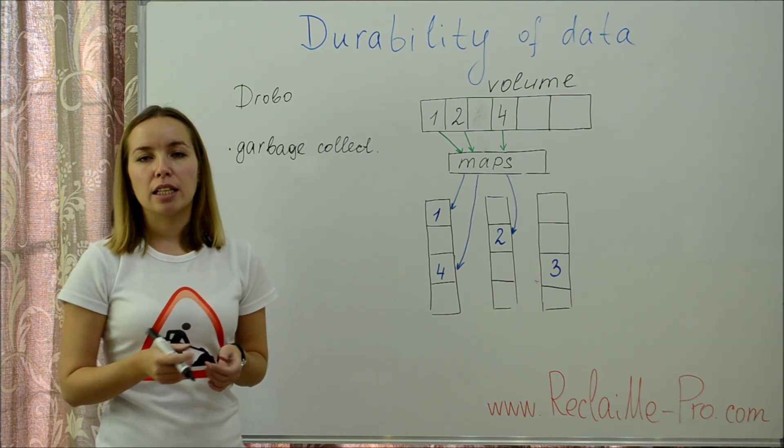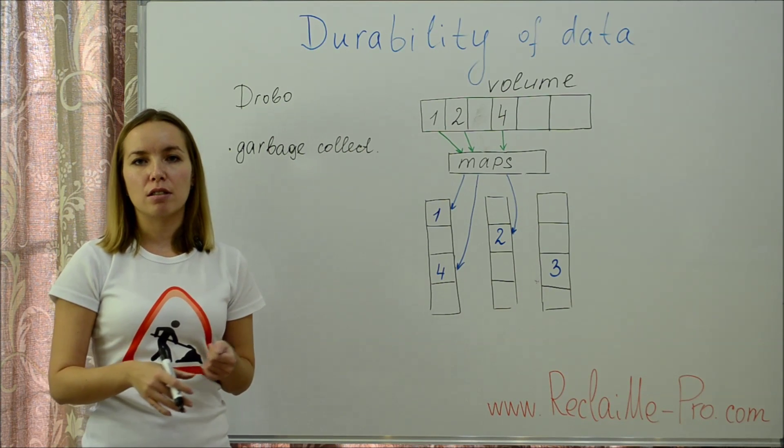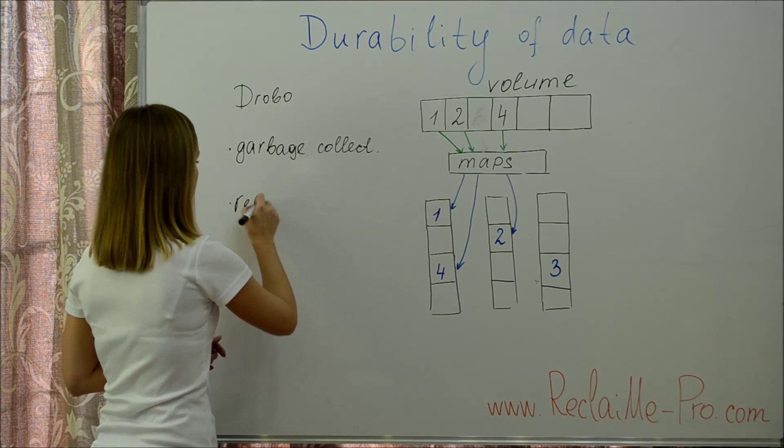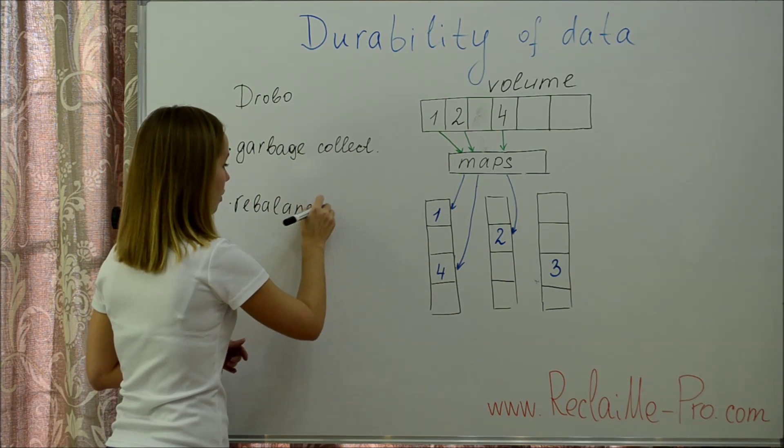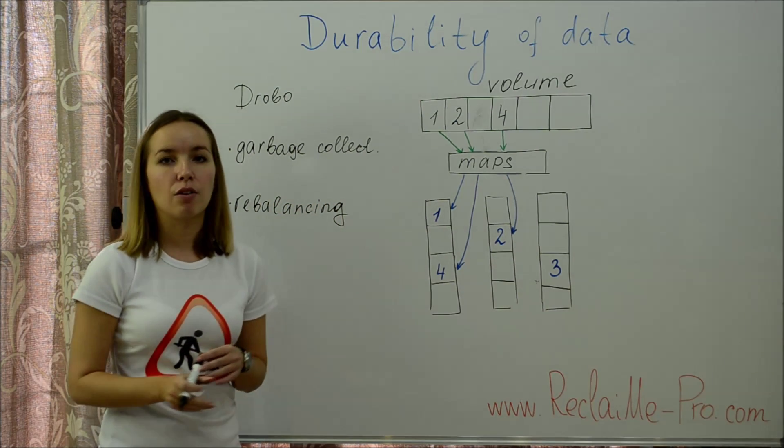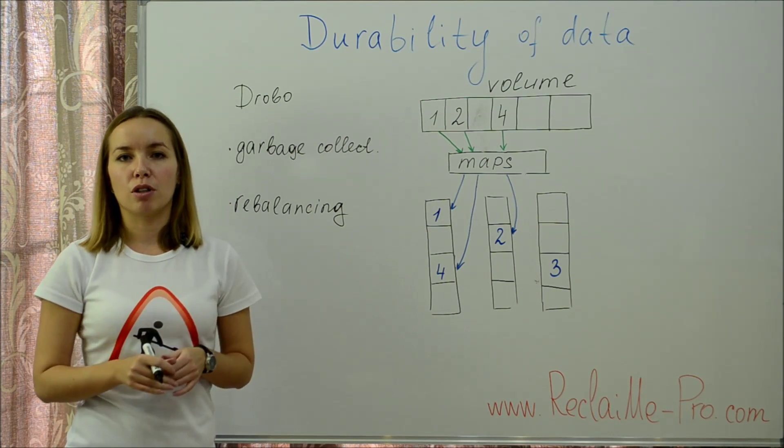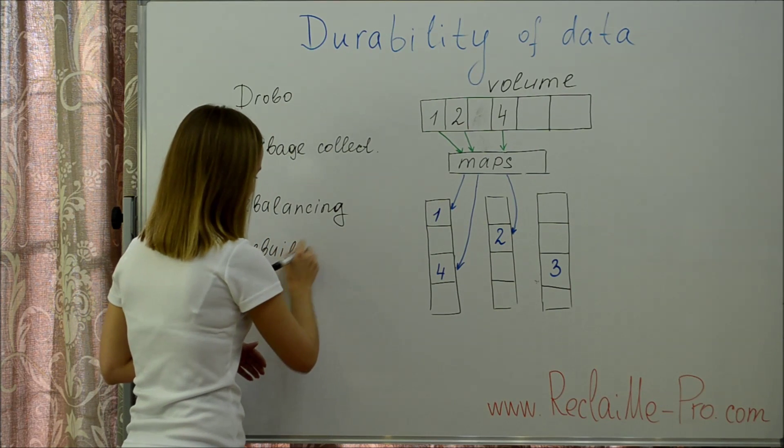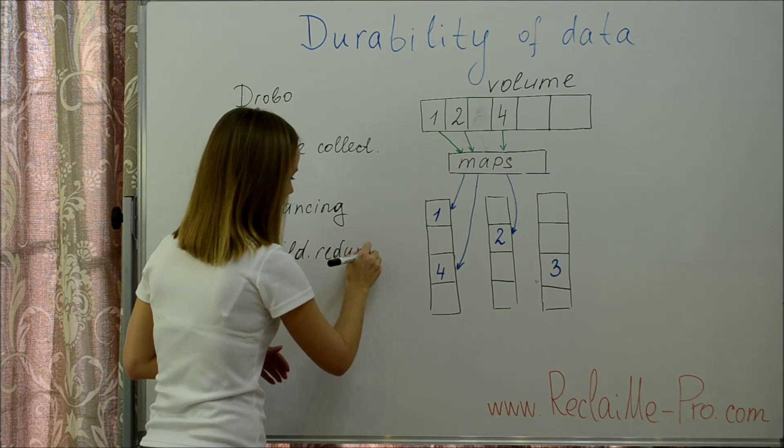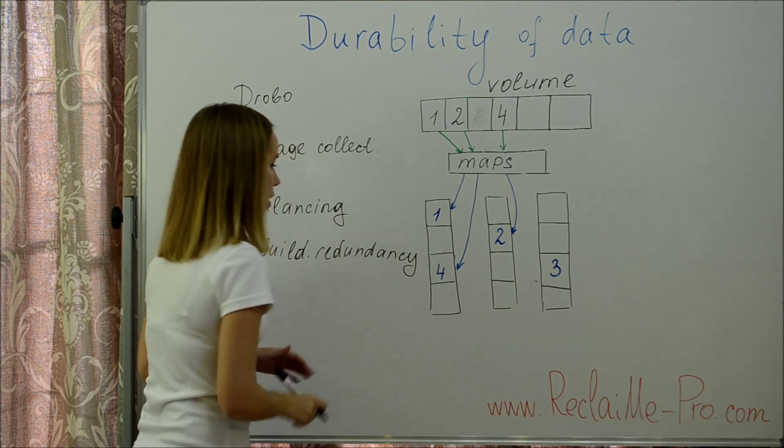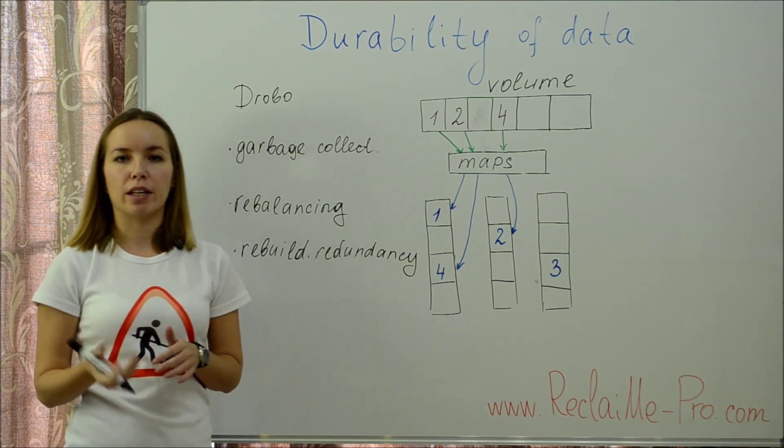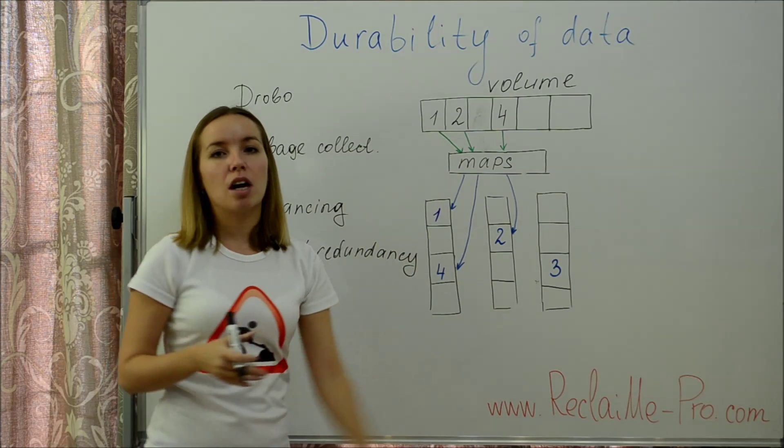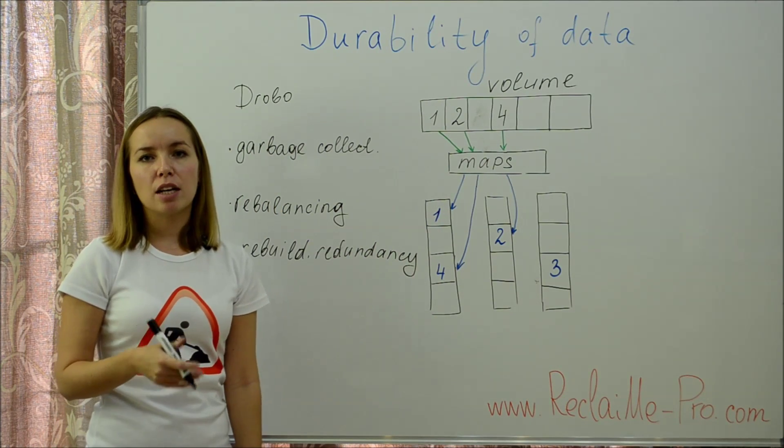Additionally, when idling a Drobo runs another background processes. Rebalancing, moving data across the disks to even out the load. Rebuilding redundancy, copying data from bad to healthy disks. Both these processes change metadata without leaving any previous copies and overwrite some parts of the data on disks.